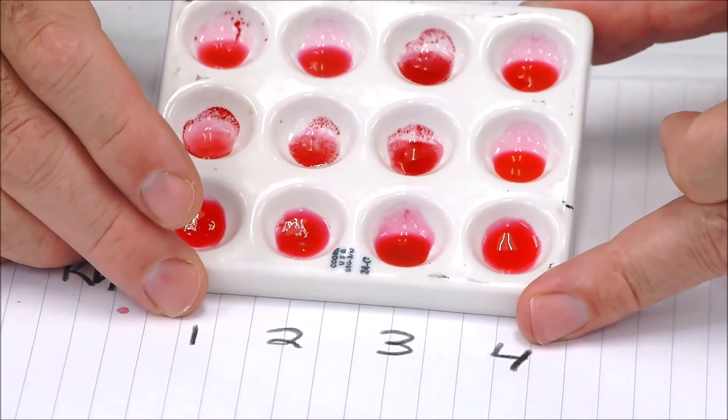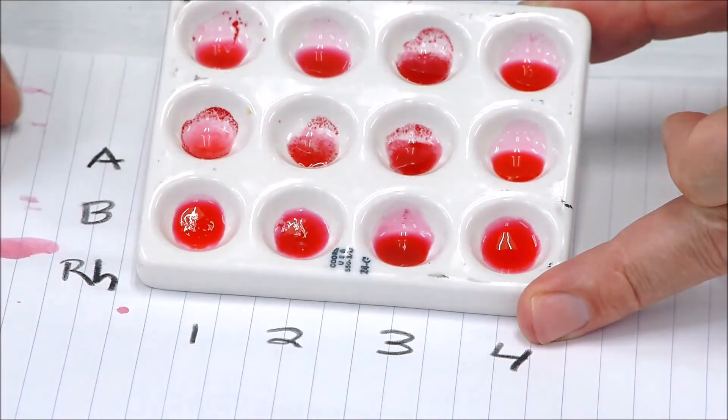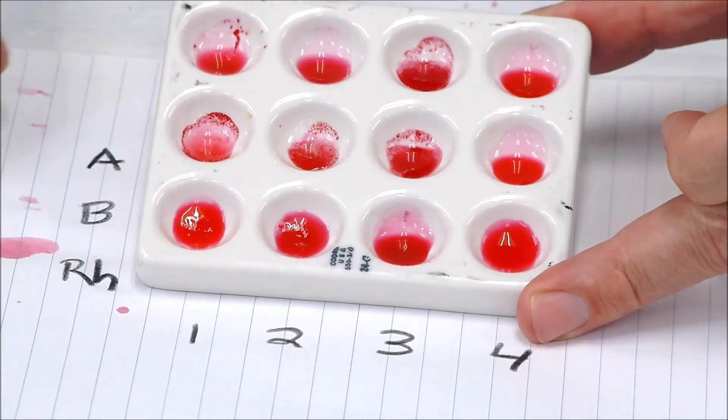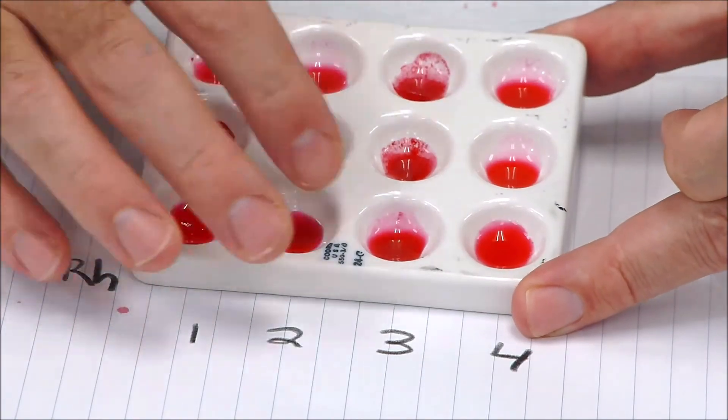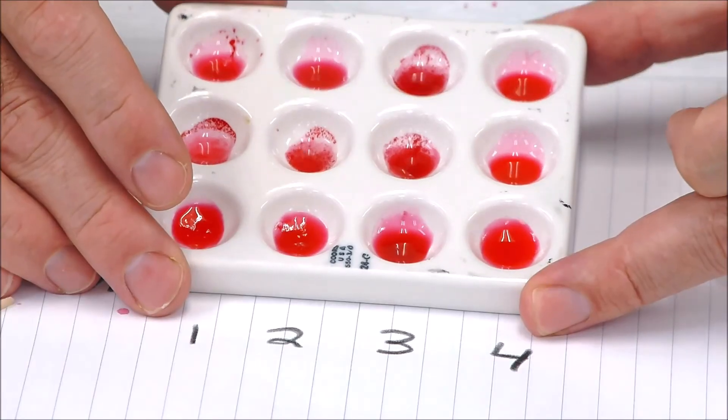For sample three, take a look at where we see clumping or agglutination. Okay, so this is sample three right here—this is well A, well B, etc. Okay, so what does it look like? And sample three doesn't have any clumping or agglutination in the Rh, so keep that in mind.